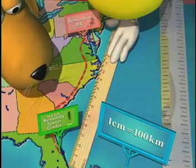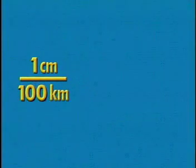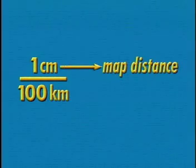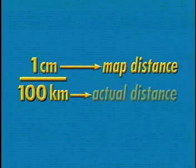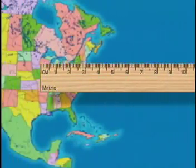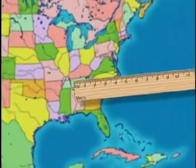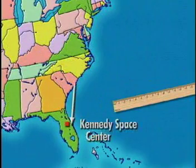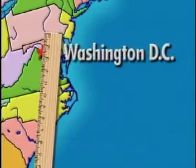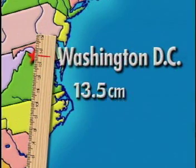The scale can be written as the fraction one centimeter over 100 kilometers. The first number, one centimeter, represents the map distance, and the second number, 100 kilometers, represents the actual distance. First, using a metric ruler and the given map, measure the linear distance from Kennedy Space Center to Washington, D.C. On Norbert's map, this distance is approximately 13 and a half centimeters.